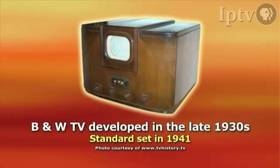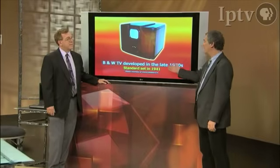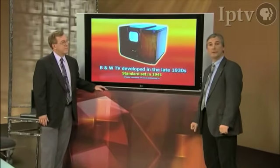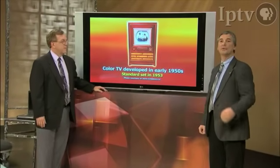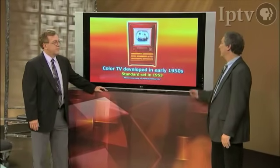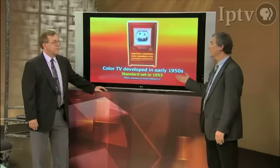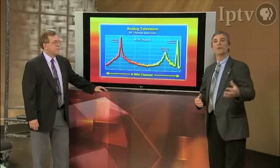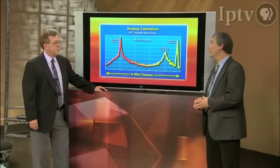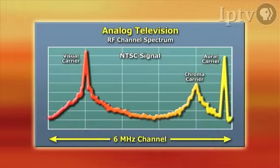Traditional analog television was developed in the late 1930s and standardized in 1941. Color was added to the system in 1953. The signal conveyed over the air for traditional analog television is made up of three carriers: a visual carrier, a chroma carrier, and an aural carrier. As you can see, the signal does not totally use the entire band and therefore is not totally efficient in the 6 MHz channel.